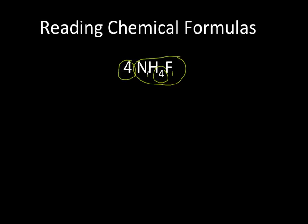For this, we have one nitrogen in every one molecule, but we have four, so four times one tells us four nitrogens. We have four hydrogens in every one molecule, so four times four gives us sixteen hydrogens, and one times four gives us four fluorine atoms.